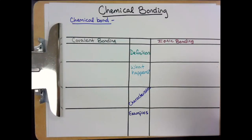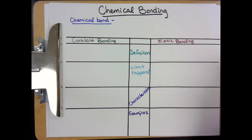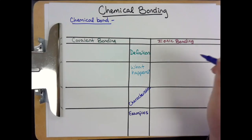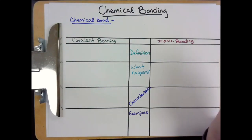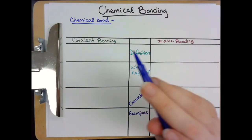Hey guys, welcome back to Monday. Hope you guys are having a good day so far. Today we're going to be finishing out our Unit 3 notes by talking about chemical bonding. So we've used the word bonds, atomic bonds, chemical bonds a little bit in class, but we haven't actually gone through and defined what it meant yet. So we're going to talk about chemical bonding and some different types of chemical bonding.